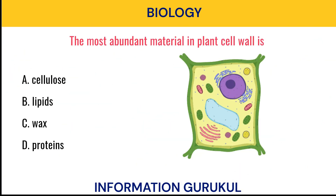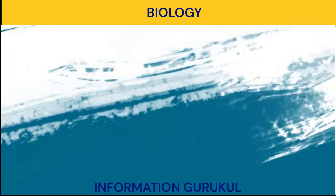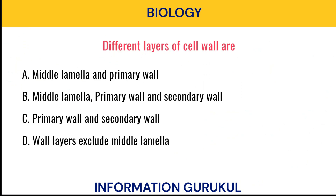The most abundant material in plant cell wall is? Cellulose. The different layers of cell wall are: middle lamella, primary wall, and secondary wall.